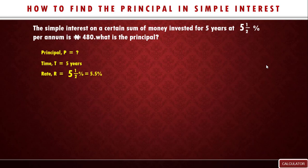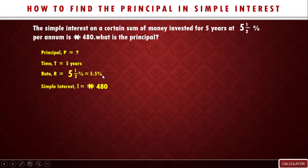What are we given again? The simple interest is given to be four hundred and eighty naira — the statement says the simple interest on a certain sum of money invested for five years at this rate per annum is that value. The formula to solve for principal is: P = 100 times I over R times T.